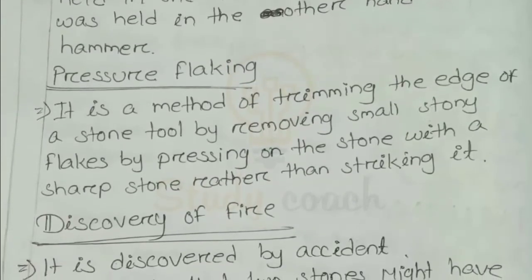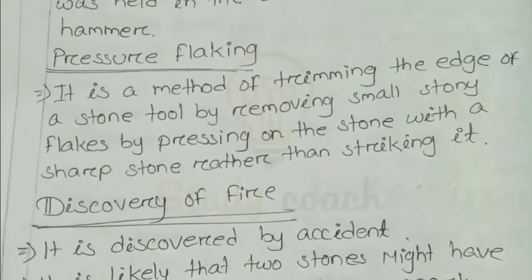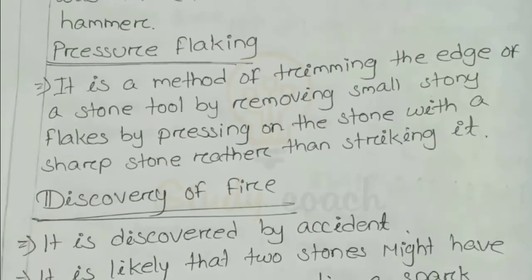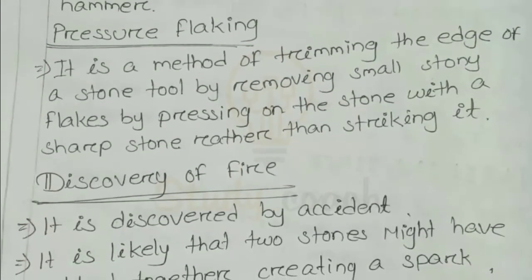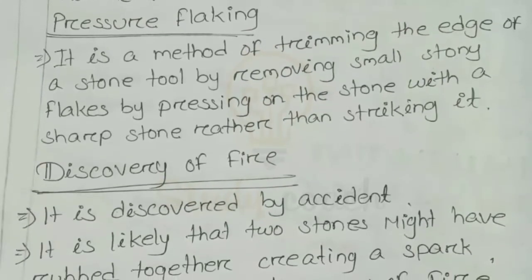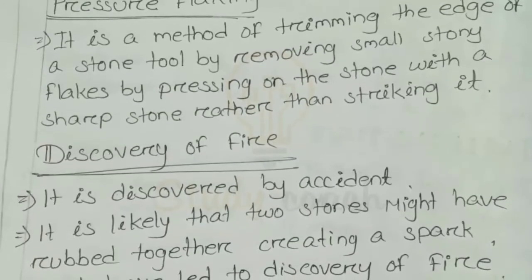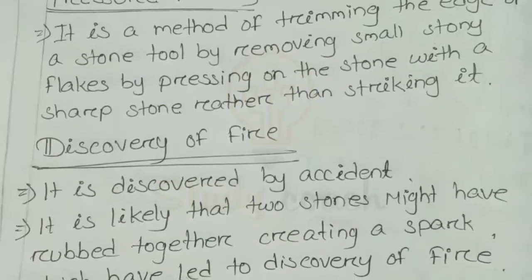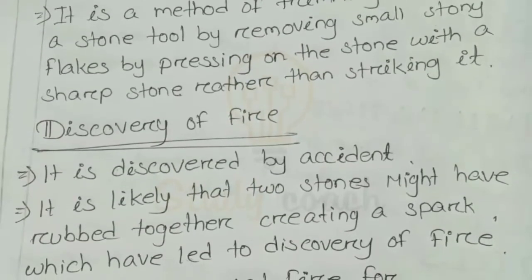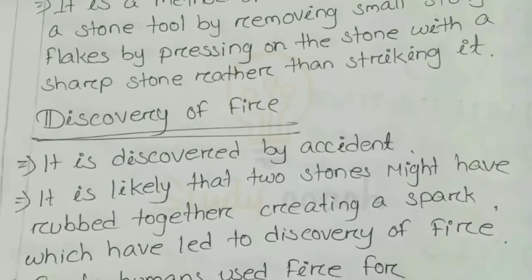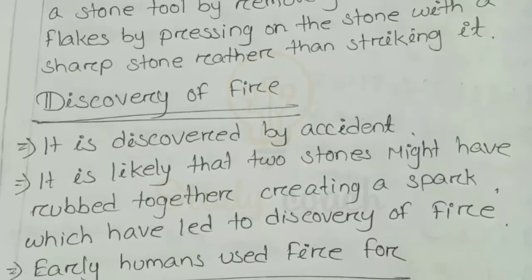The second technique is pressure flaking. It is a method of trimming the edge of stone tools by removing small stony flakes by pressing on the stones with a sharp stone rather than striking it. In this technique, they trimmed the edge of the stone to make it sharp, to kill animals easily. One technique produced a hammer-like structure, and the other produced a sharp-edged stone.